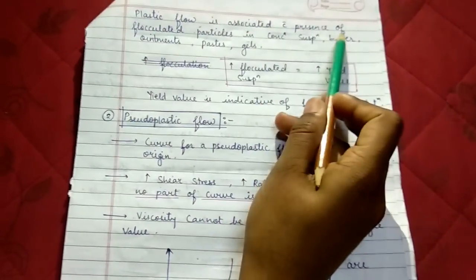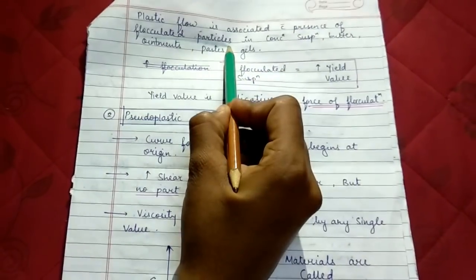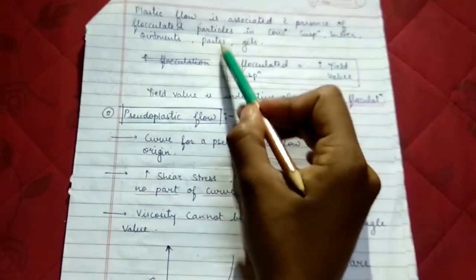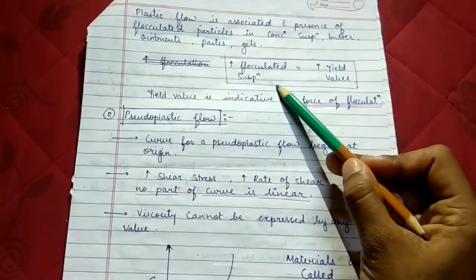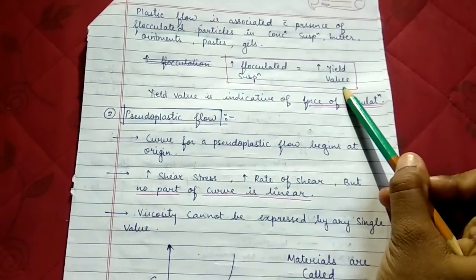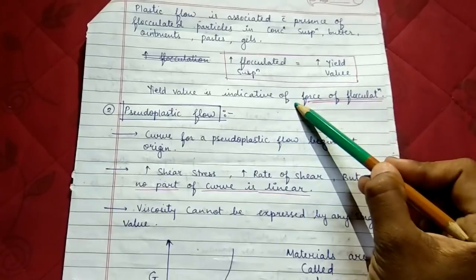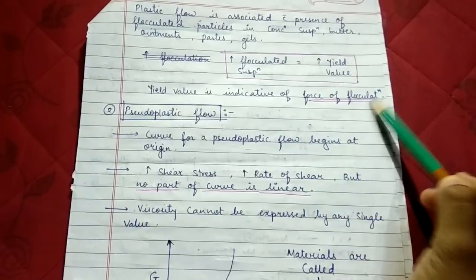Plastic flow is associated with the presence of flocculated particles in concentrated suspensions, butter, ointments, pastes, and gels. If there is increase in flocculated suspension, there will be increase in yield value. If yield value increases, it indicates the force of flocculation has increased.